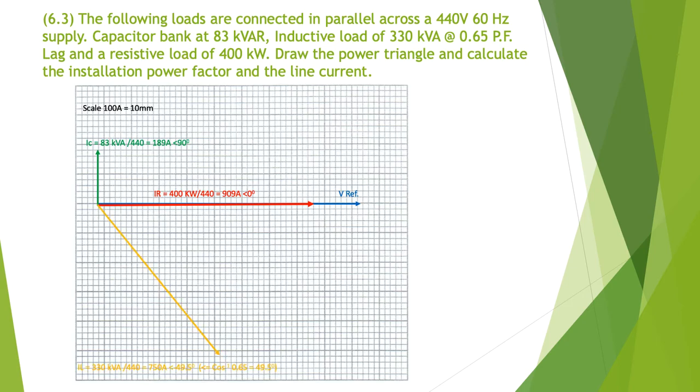And then finally we've got our orange one which is our inductive load of 330 kVA at 0.65 which is about 50 degrees. So we've put that in. So I worked it out down here, you can see cos to the minus one of 0.65 I've turned that back into an angle. So that angle in there is our 49.5 degrees. The length of each of the lines representing the current, so we use that and we end up here with a current of 750 amps.